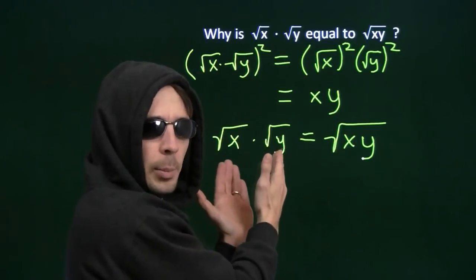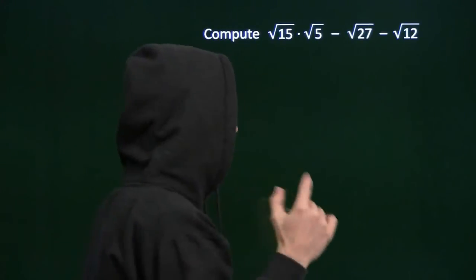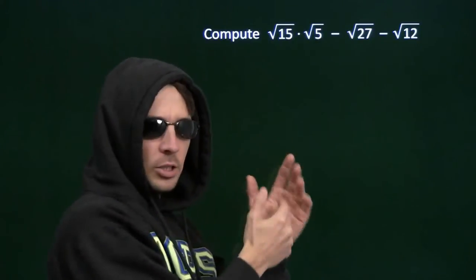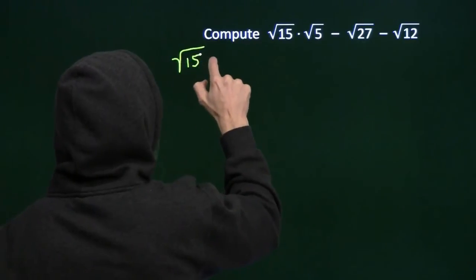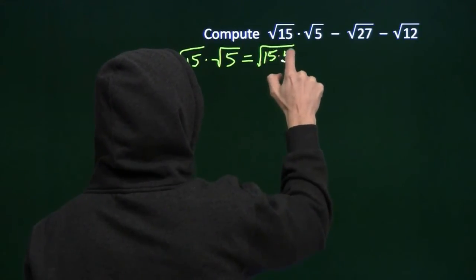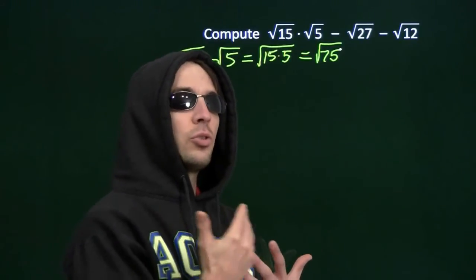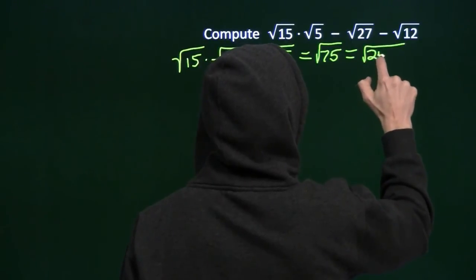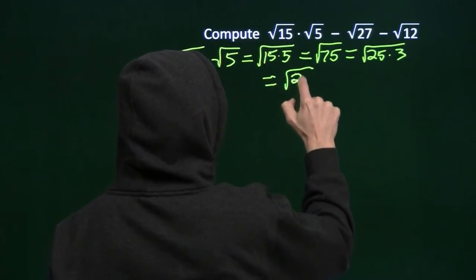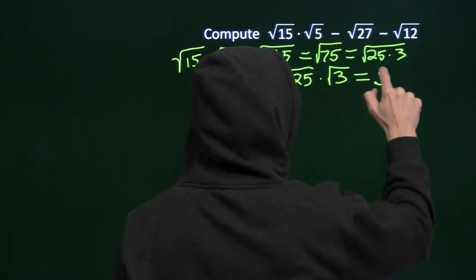So I can combine a product of square roots, or I can take the square root of a product and split it up. Now let's go back to our original problem. We see a product of square roots — square root of 15 times the square root of 5 — and we know how to combine those. That equals the square root of 15 times 5, which is the square root of 75. And 75 is 25 times 3, so I can write that as the square root of 25 times the square root of 3. Square root of 25 is just 5, and we get 5 times the square root of 3.